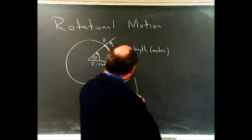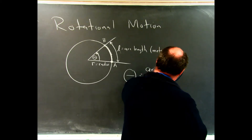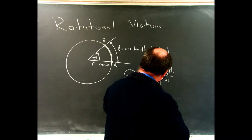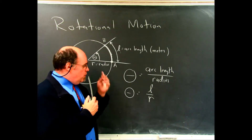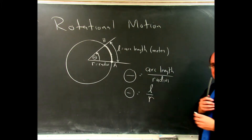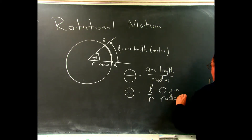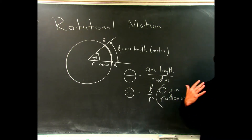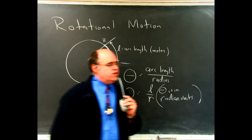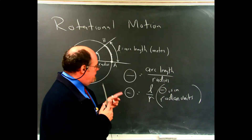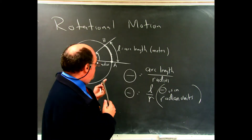The way angles are defined is: the angle is equal to the arc length over the radius — in this case, L over R. When we do this, the angle is in radians. This is the definition of a radian: when you go through the arc length and divide it by the radius.